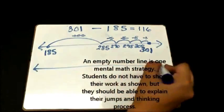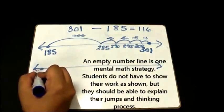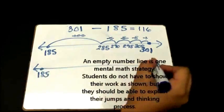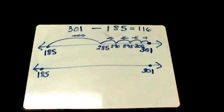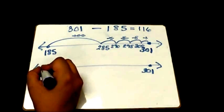That's not the only way to solve it. A student might start off at 185 and not be able to take that jump of 100 right away.